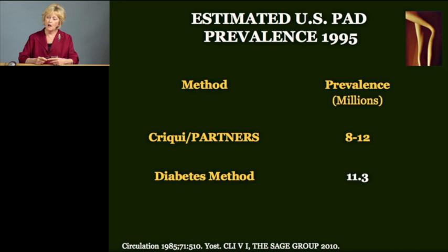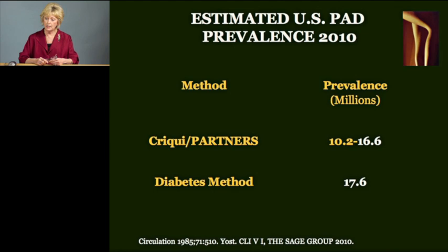Going back, if we look at the prevalence of PAD in the U.S. in 1995, note that the Cricky Partners method gives 8 to 12 million. If you calculate the prevalence based on the diabetes method, it's 11.3 million — right in the middle of that range. Fast forward to 2010: the diabetes method gives 17.6 million. If you recalculate the Cricky Partners method, you get a range of between 10 and 17 million, and that 17 million is right in line with the 17.6 million.